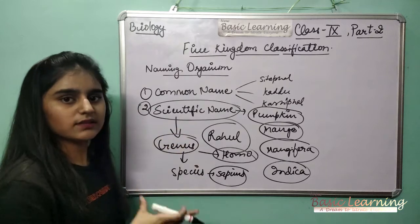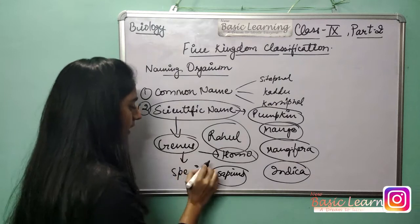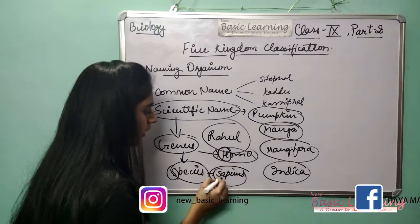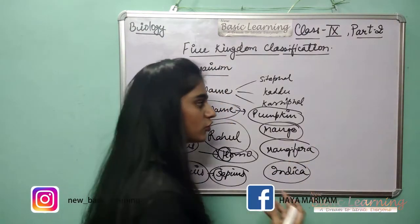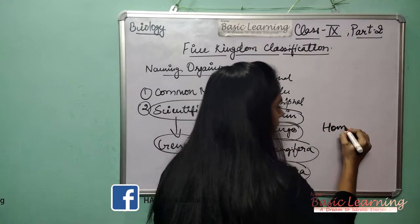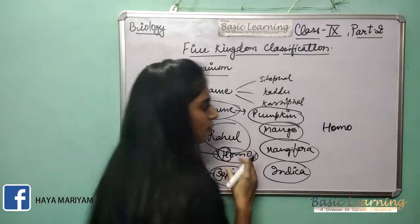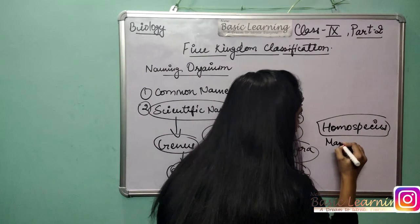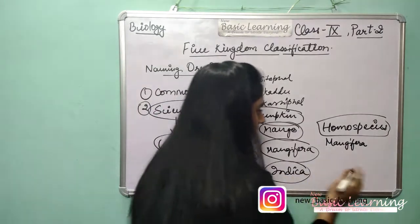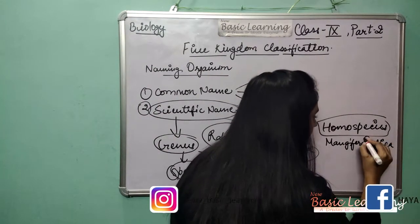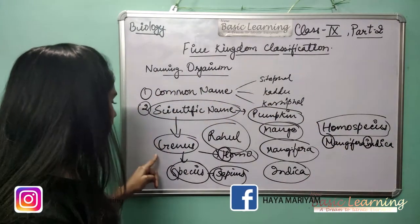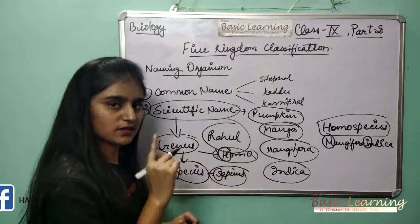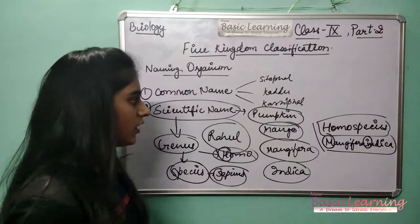Now we will talk about how to write a scientific name properly. First the genus comes, then the species. The genus is always written with a capital letter and the species is always written with a small letter. For example, Homo sapiens — 'H' is capital and 'sapiens' is in small letters. Similarly for mango, 'M' in Mangifera is capital and 'indica' is in small letters.